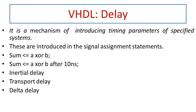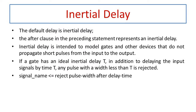Based on whether we are simply adding a delay, transporting the given input terms, or scheduling the term, we have three types of delay to discuss. Number one is called inertial delay, the second is called transport delay, and the third is called delta delay. We will see them one by one with the help of examples, starting with inertial delay.